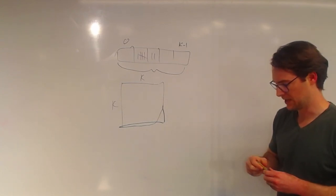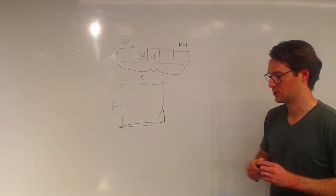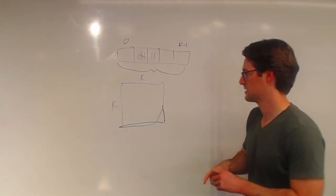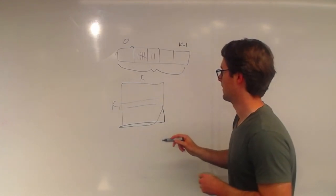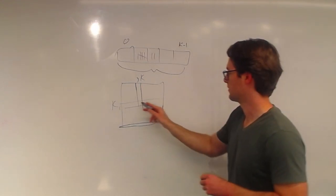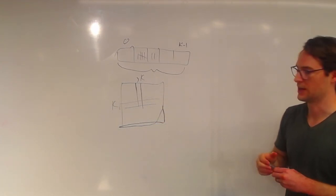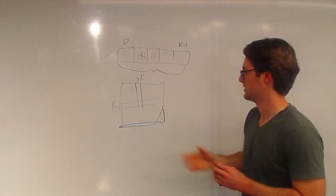And it represents, each of the cells represent the number of ways of going from having a total value of, let's say you're at row i, the total value of i, the number of ways of going from a total value of i to a total value of j by picking some number of monsters.